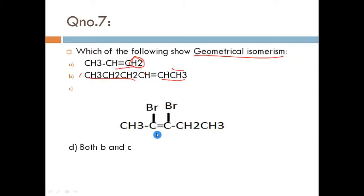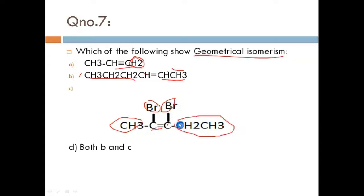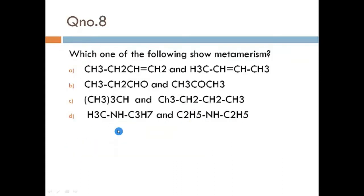Looking at the third option C: bromine is attached on one side of the double bonded carbon and methyl on the other — different groups are attached. Similarly the other double bonded carbon also has two different groups attached. So this will also show geometrical isomerism. Our answer is both B and C.